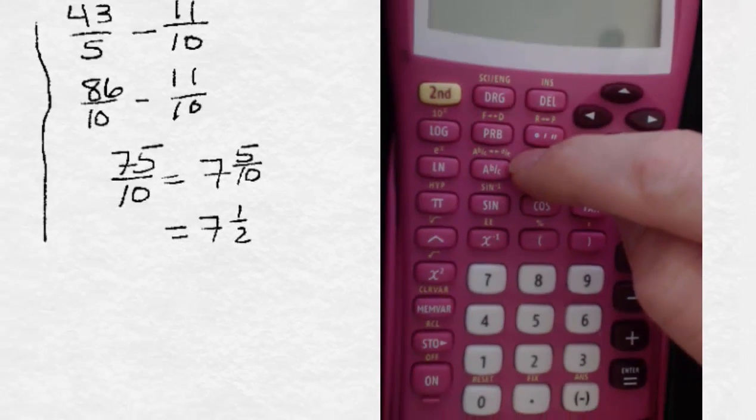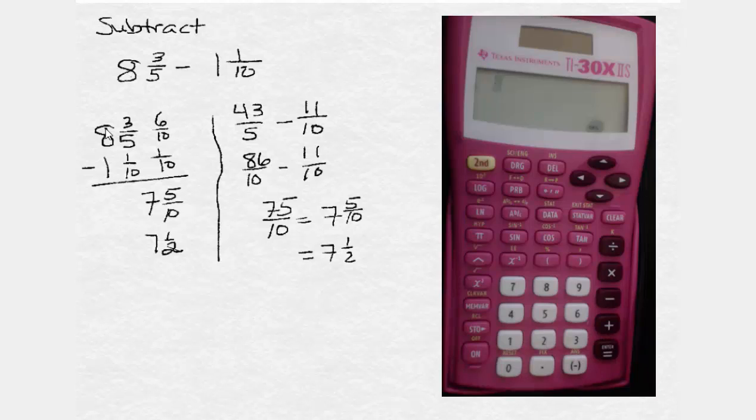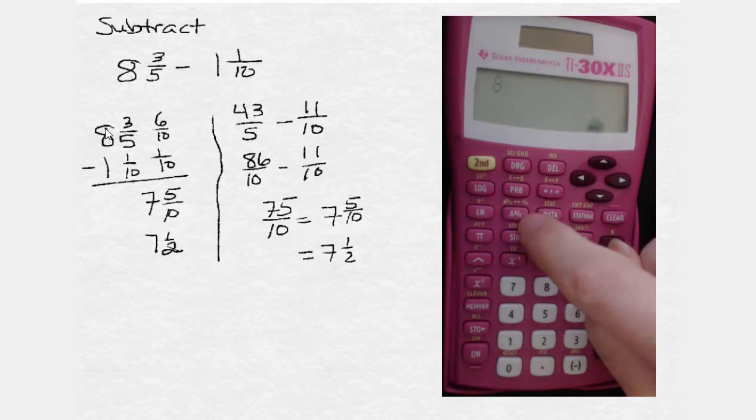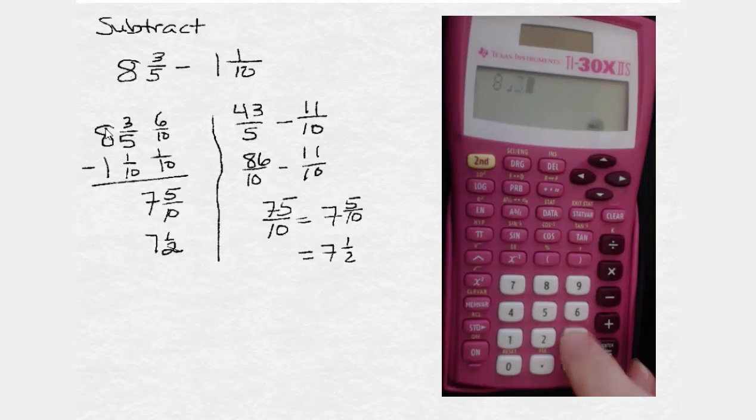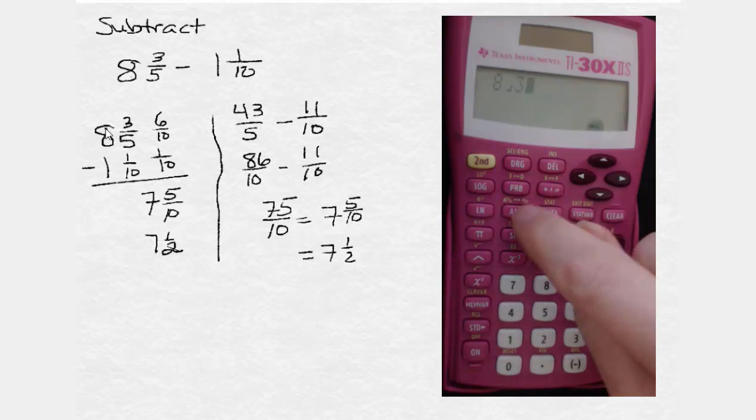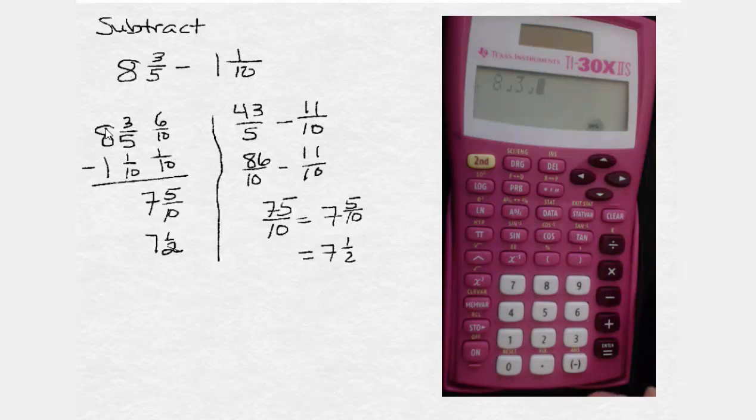But let's go ahead and turn on the calculator and enter our first mixed number. All we have to do is type 8, hit the mixed number key, type the numerator of the fraction, 3, hit the fraction key again, the mixed number key, and then hit the 5. And that means 8 and 3 fifths.